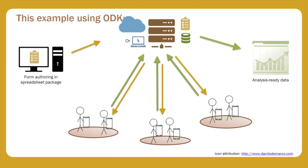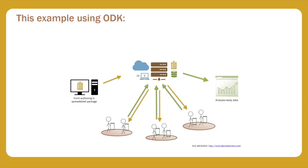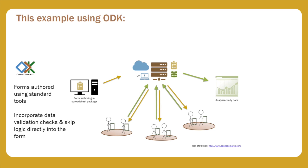Let's review quickly. The forms are authored on a computer, and a major benefit of using the Open Data Kit is that the forms are authored using standard tools that most researchers have access to and the capacity to learn. You don't need high levels of programming expertise to create simple forms. Most tools, including ODK, can incorporate data validation checks directly into the form, preventing a lot of errors before they happen. An online repository will allow teams working remotely to access and share data, and provide a central location for enumerators to get forms, ensuring everyone is working with the same version of the collection tool.